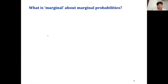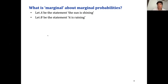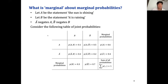What is 'marginal' about marginal probabilities? We can illustrate this with an example. Let A be the statement 'the sun is shining' and B be 'it is raining.' All or much about probabilities can be understood from staring at tables of joint probabilities long enough.